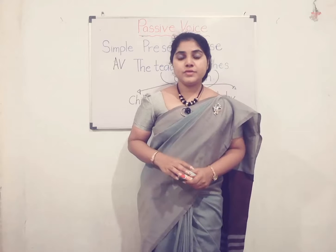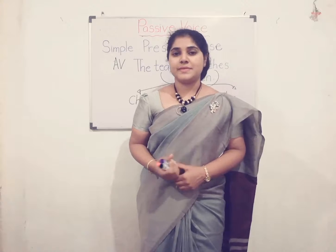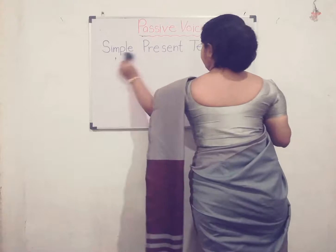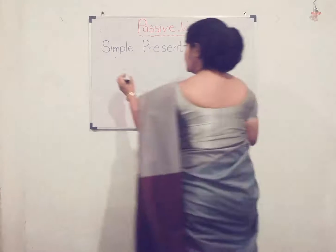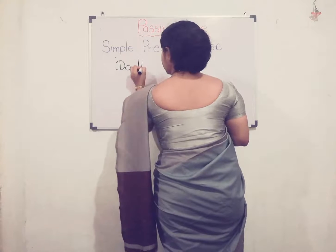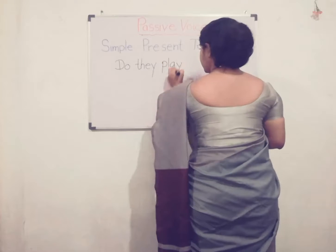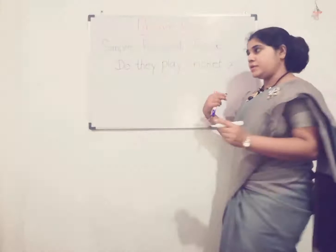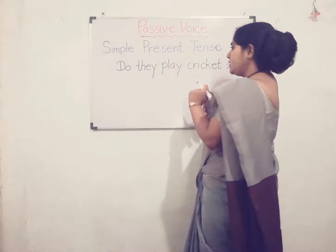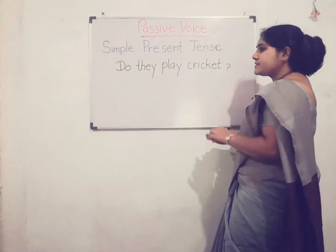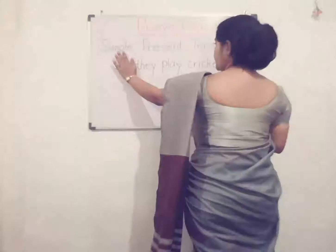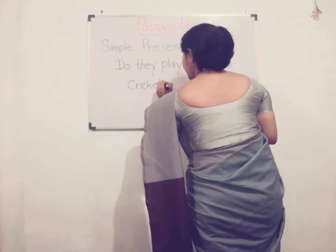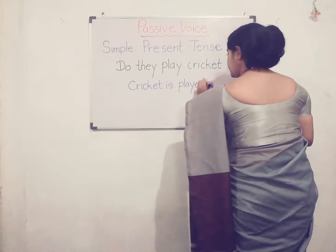Then, how do you make a question in passive voice? Let's take an example: 'Do they play cricket?' First, take this question without the question word 'do' — that is 'they play cricket'. Then convert it into passive voice without the question word 'do'. You have to take 'cricket' as the subject: 'Cricket is played by them.'